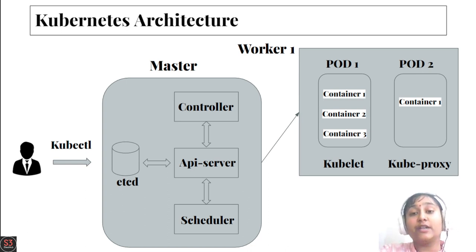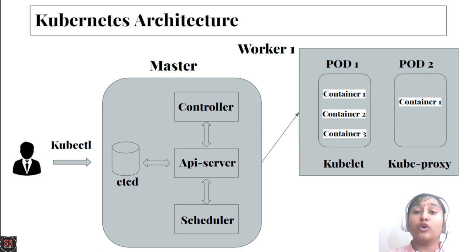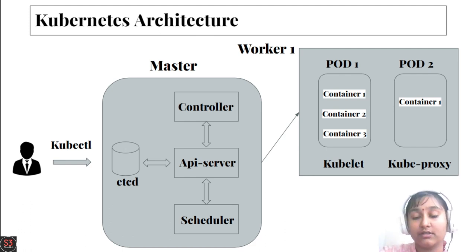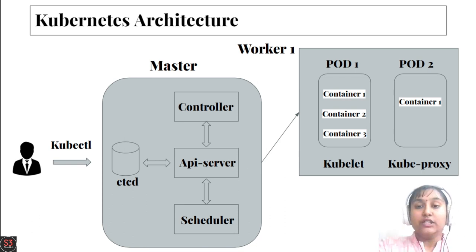There is some confusion between what is a node and what is a pod. A node is a server in which our workers and containers run. A pod is the smallest unit of Kubernetes, in which our actual application runs. There can be a group of pods running under a single node.